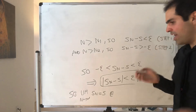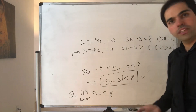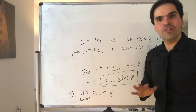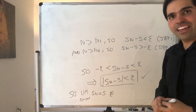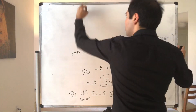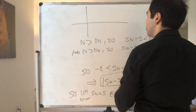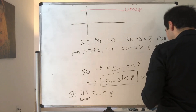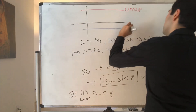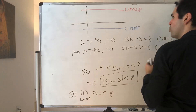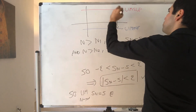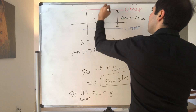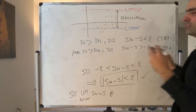This concludes the proof. In a previous video we showed that if a sequence converges, then lim-sup equals lim-inf. Now we've shown that if lim-sup equals lim-inf, then it converges. More precisely, if the lim-sup is not equal to the lim-inf, then the sequence doesn't converge. This difference between lim-sup and lim-inf is sometimes called the oscillation. So if a sequence has positive oscillation, it doesn't converge — and the notion of oscillation is used a lot in analysis.